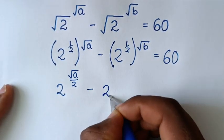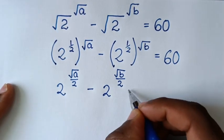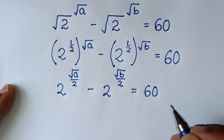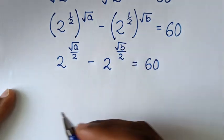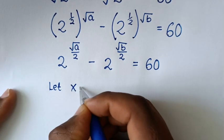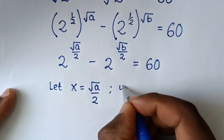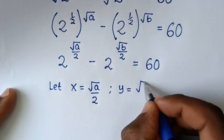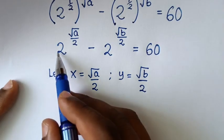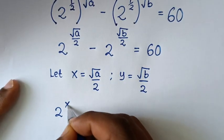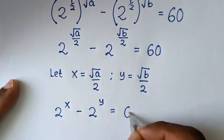Then minus 2 to the power of square root of b over 2, is equal to 60. In the next step, we'll let x equal to the exponent square root of a over 2, and y equal to the exponent square root of b over 2. So it becomes 2 to the power of x minus 2 to the power of y is equal to 60.